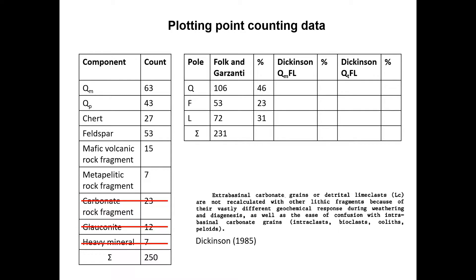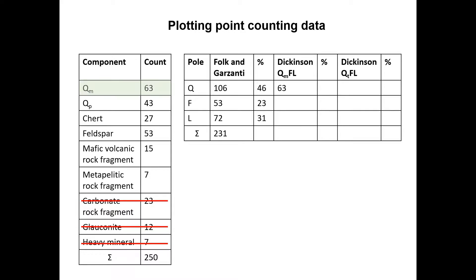For the QM-FL plot, this leaves us with 63 counts of monocrystalline quartz, 53 counts of feldspar, and a total of 92 counts of lithic fragments, including polycrystalline quartz and chert. This gives a new sum of 208 counts, which we will transform into percentages now: 30% QM, 26% F, and 44% L.